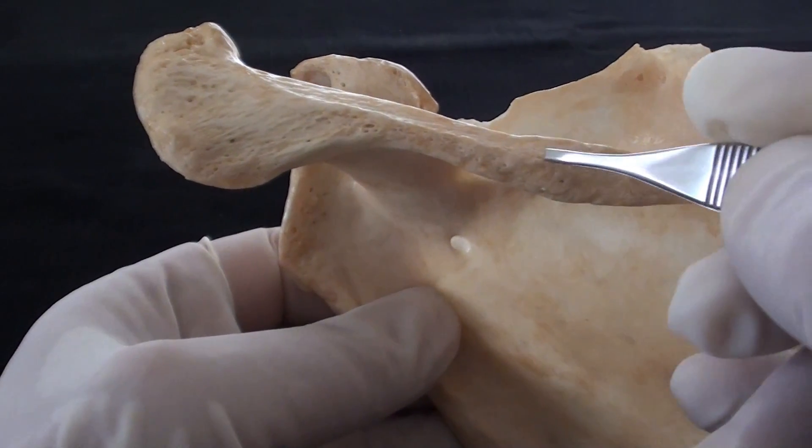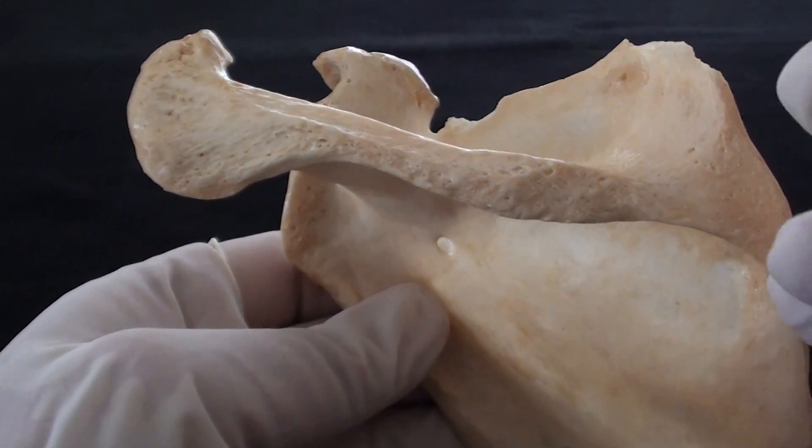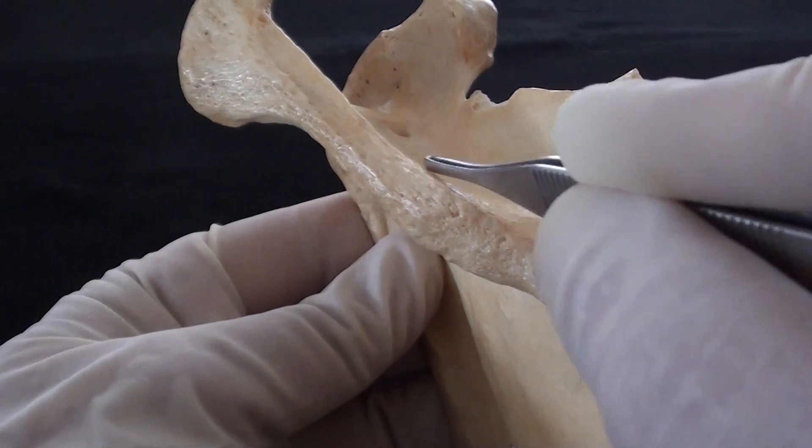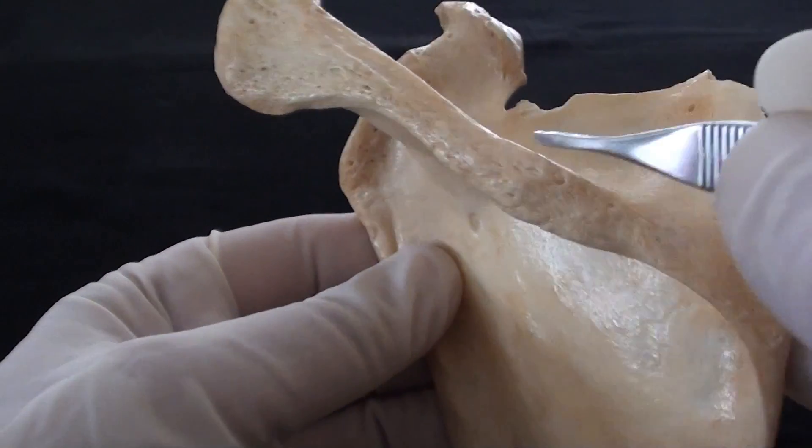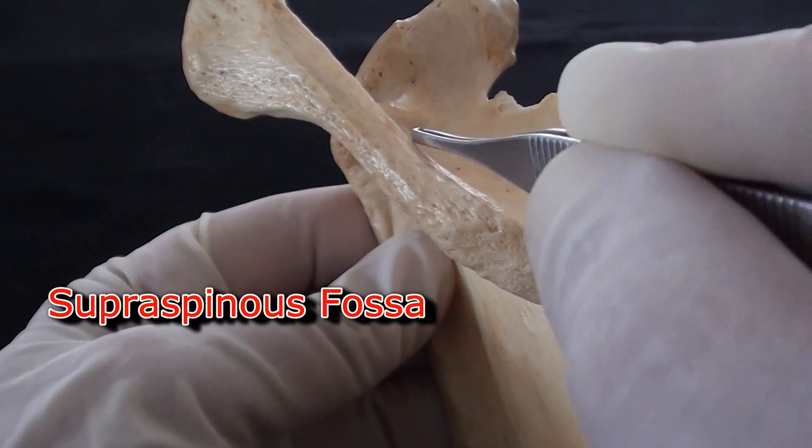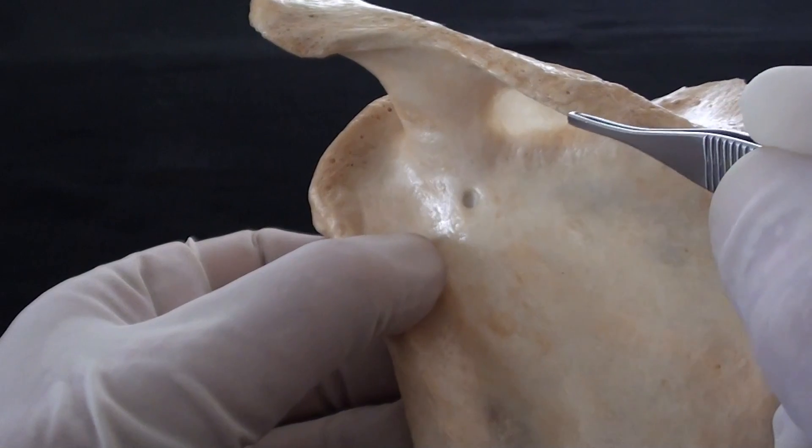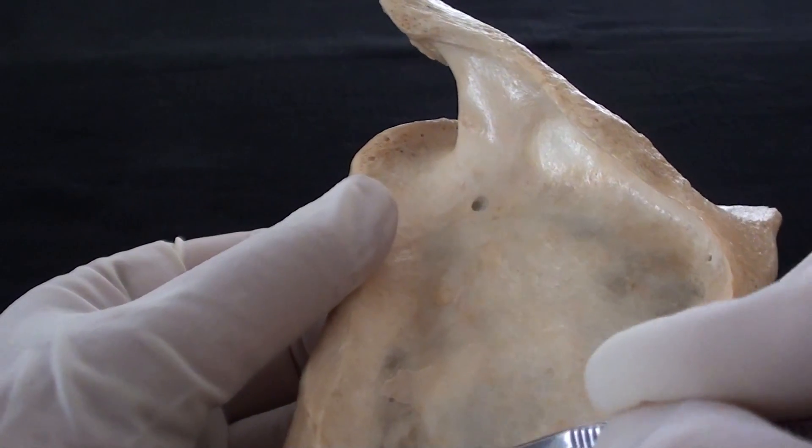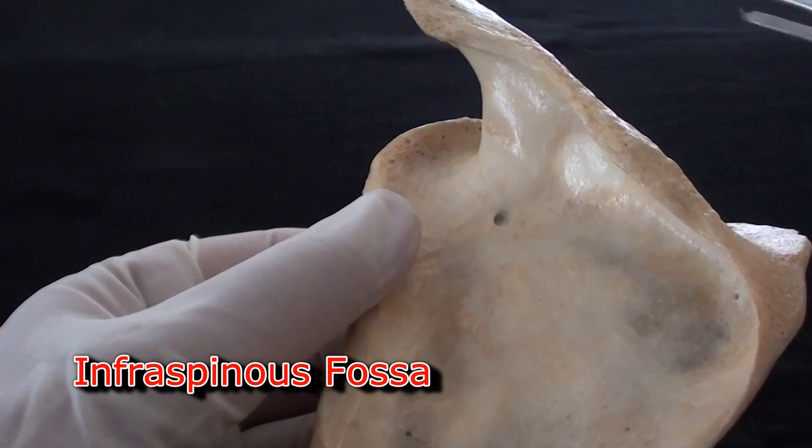Then the spine which really divides the dorsal aspect of this bone into two large depressions. Above the spine comes the supraspinous fossa and inferior to the spine of the scapula is another large area known as the infraspinous fossa.